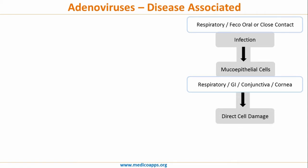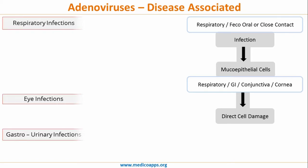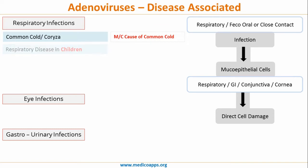The systems affected are the respiratory tract, the GI tract, the conjunctiva, and cornea. There is direct cell damage which leads to the following infections: common cold and coryza. This is important because adenoviruses are one of the most common causes of the common cold.